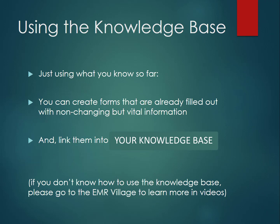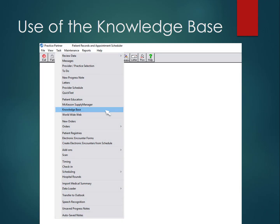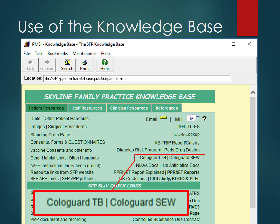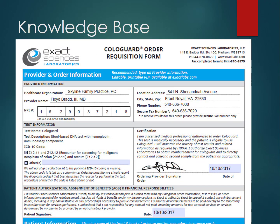You can do a lot with the Knowledge Base. Using what you know so far, you can create forms that are already filled out with non-changing but vital information, and link them to the Knowledge Base. If you don't know how to use the Knowledge Base, please go to the EMR Village to learn more. From the task menu, go to the Knowledge Base — this is a browser with information you've created yourself. On the first page, there's a Cologuard form area, and clicking on it brings up the pre-filled form. Please note that the dates use a JavaScript function, which we will talk about more later.